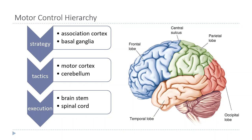Then at the tactics level of a motor hierarchy — once we know what we want to do and what our goal is — the question becomes what muscles need to be contracted and in what order in order to create smooth motion while also keeping the body posture upright the whole time.